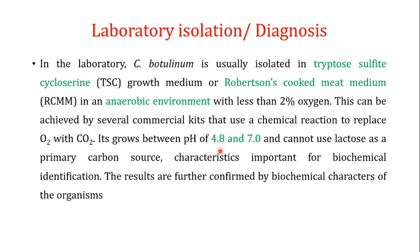It grows best between a pH of 4.8 and 7, and it cannot utilize lactose as a primary carbon source — an important characteristic for biochemical identification of C. botulinum. Results can be further confirmed by the biochemical characters discussed in the previous video: Gram-positive, non-motile, catalase-negative — these parameters also help in identification and diagnosis.